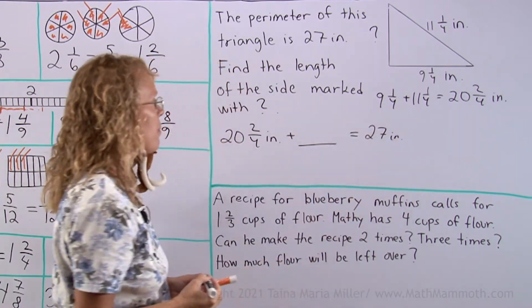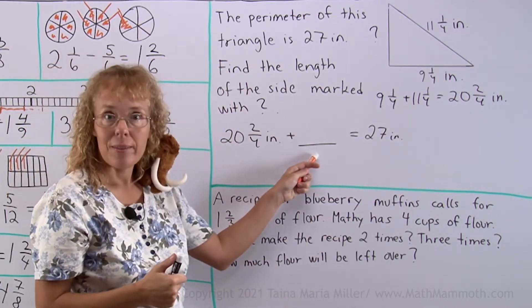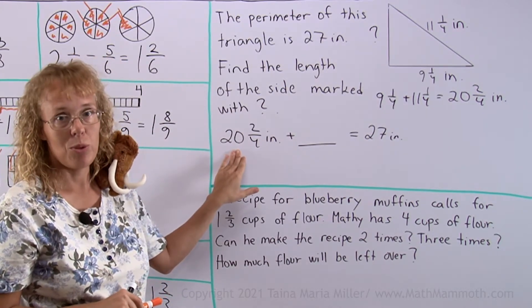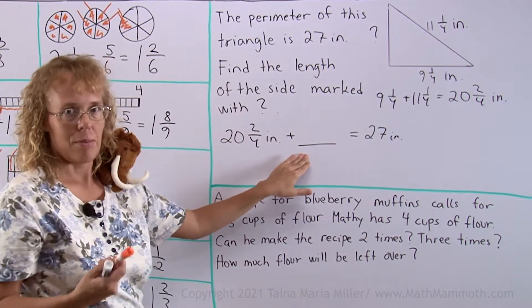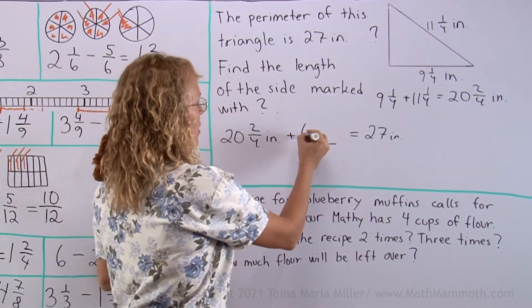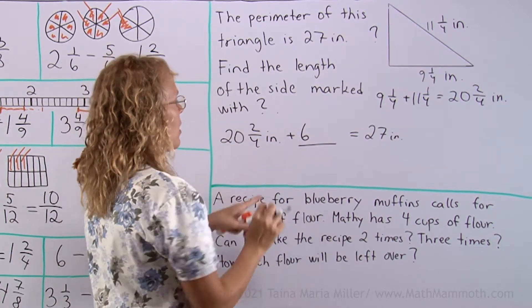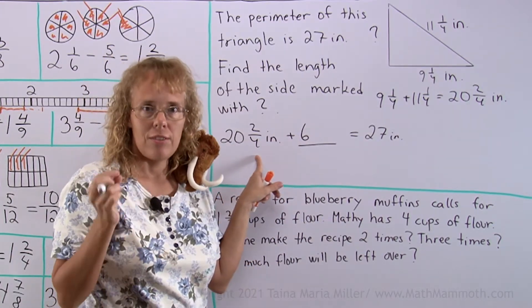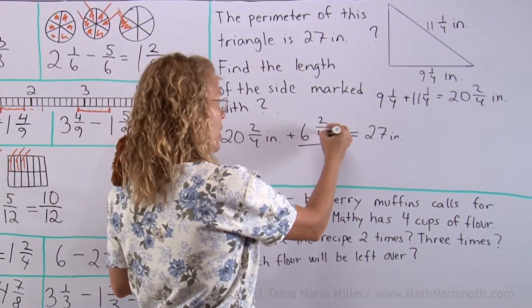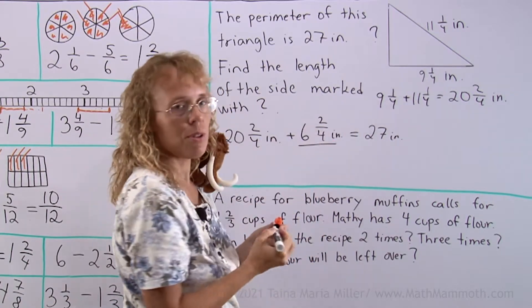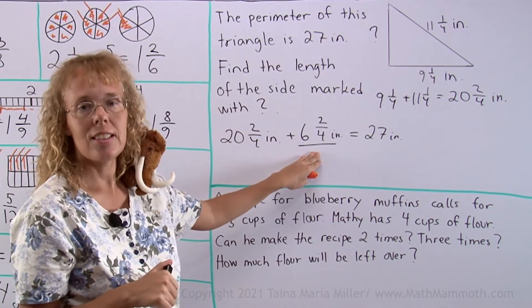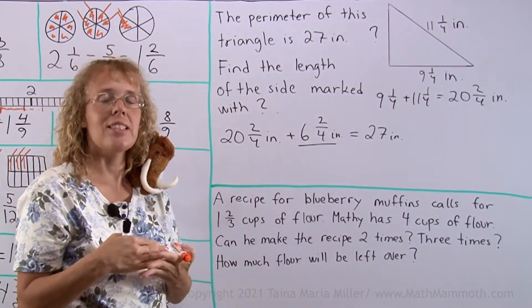9 1/4 plus 11 1/4 inches. 9 plus 11 is 20, and then these two make 2/4, so 20 and 2/4 inches. And now we will think, what number would go here? Well, if I put 7 inches there, it's gonna be too much, right? It has to be 6 inches and something, 6 inches and a fraction, right? So that I get 20 plus 6 makes 26 inches, and then 2/4 and a fraction makes the last inch. 2/4 plus another 2/4, right? That would make 4/4 or the last whole inch. Okay, so this is the answer. 6 2/4 inches, which is the same as 6 1/2 inches.